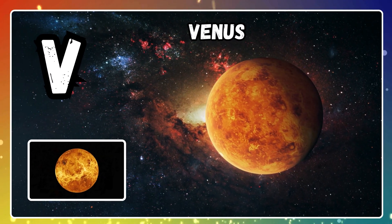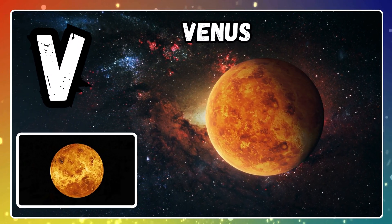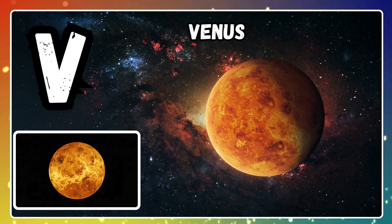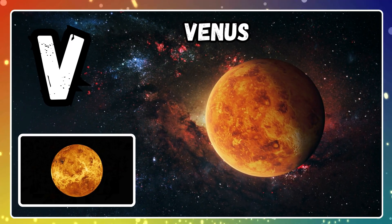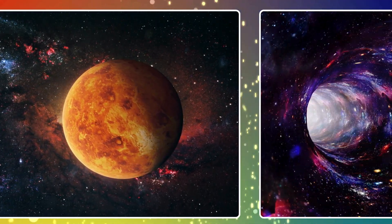V is for Venus. Venus is hot and bright, the twin of Earth.